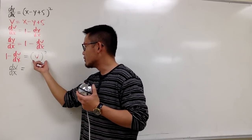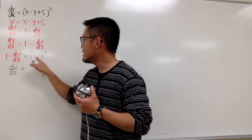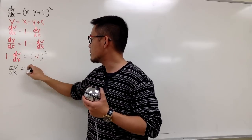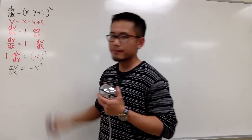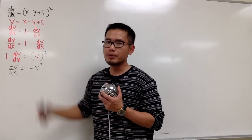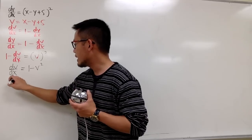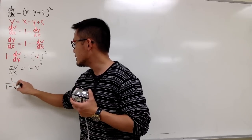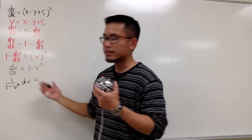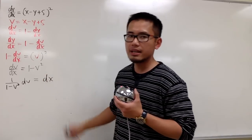This is separable now. I'll go ahead and divide both sides by 1 minus v squared, ending up with 1 over (1 minus v squared) dv. And let's multiply dx on both sides as well, so we have dx on the right-hand side.